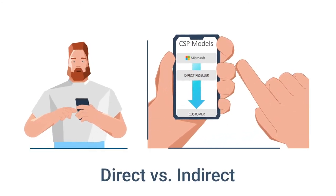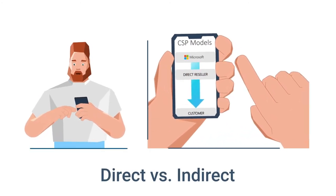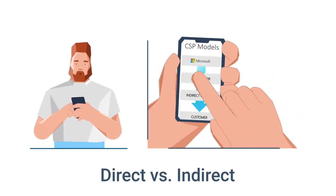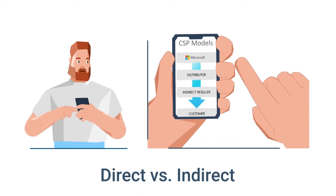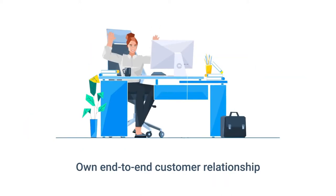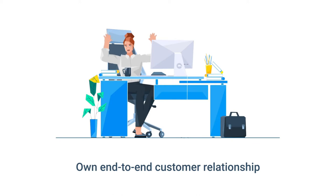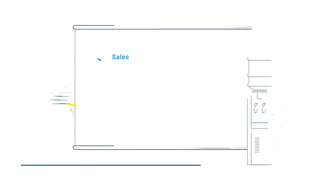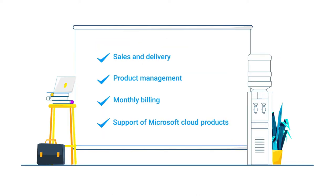The CSP program has direct and indirect sale motions, both of which are partner-centric, with partners owning the end-to-end customer relationship from pre-sale to post-sale and through cross- and up-sale, meaning they facilitate the sales, delivery, management, billing, and support of Microsoft Cloud products.